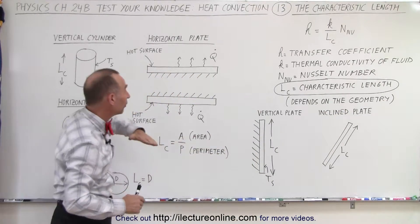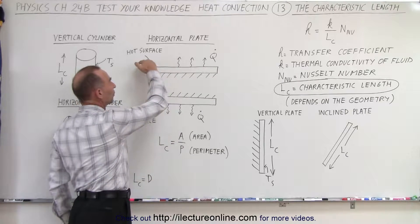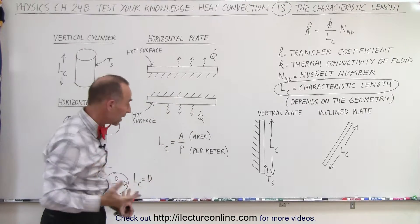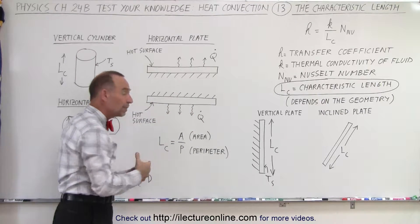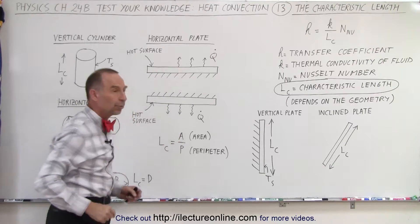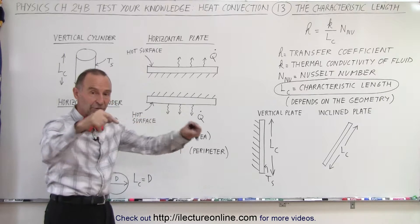But what if we tip the plate over and we have it horizontal? Then, you can see here, if the hot surface is at the top or if the hot surface is at the bottom, it doesn't really matter, it's the same thing. The characteristic length is going to be the ratio of the area of the plate divided by the perimeter. So it does depend upon whether it's a skinny long plate or if it's a square plate. You'll get different values depending upon the area to perimeter ratio.